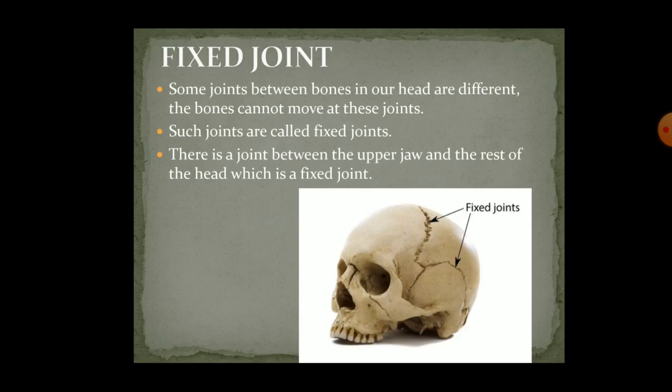Now the fixed joints. There are some joints present in the skull, between the bones of our head, and these joints are known as fixed joints — meaning we cannot move these joints even if we try. For example, the upper jaw is fixed with the rest of the head in such a way that we can only move our lower jaw; we cannot move our upper jaw as it is fixed with the skull.